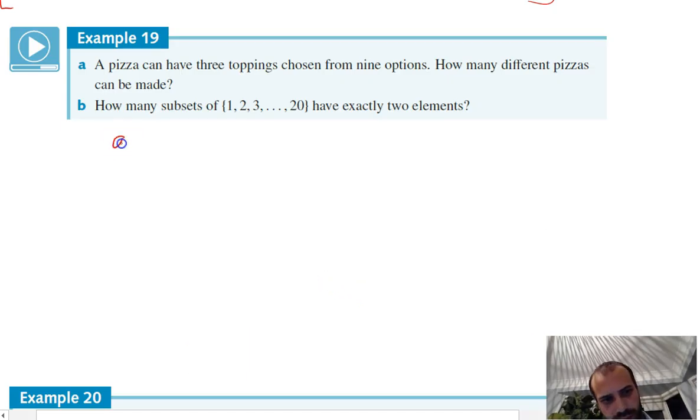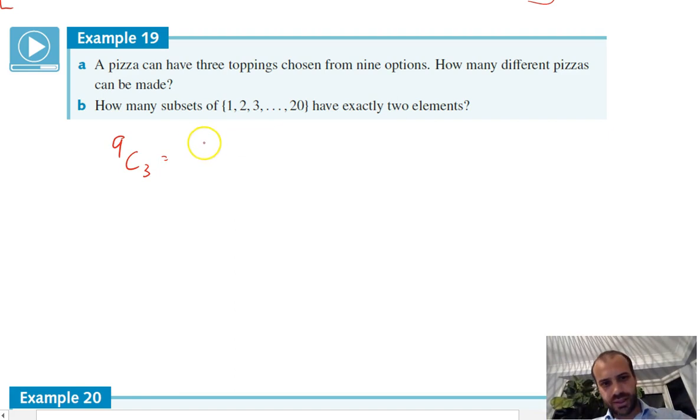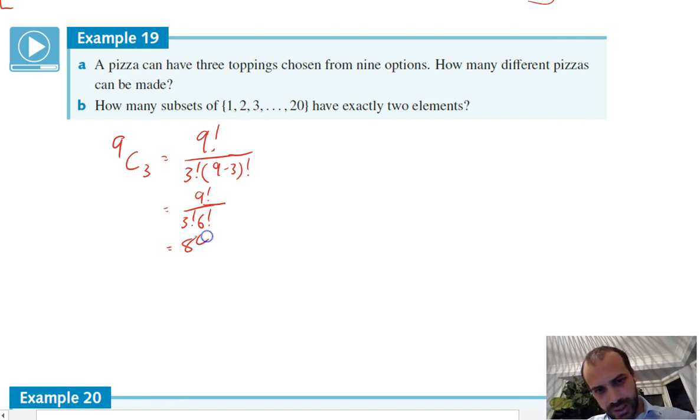Obviously, it doesn't matter whether you put the ham and then the pineapple or the pineapple and the ham. In this case, it's a combinations question, not a permutations question. We have nine choose three. And that, according to our formula, is nine factorial over three factorial times nine minus three factorial, which is nine factorial, three factorial, six factorial. Calculator tells me there's 84 toppings available.